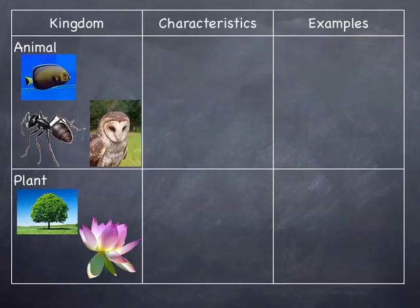We're going to be talking about three main characteristics: number of cells, complexity of cells, and type of nutrition.